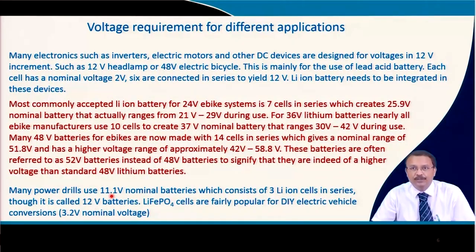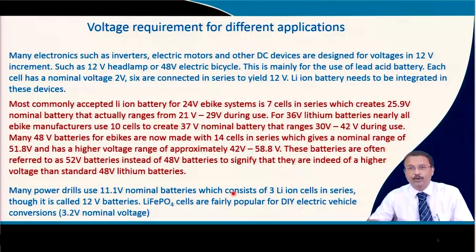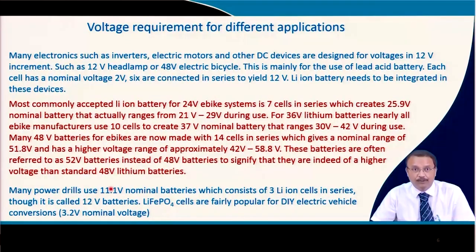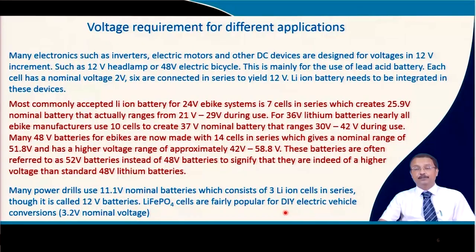Many power drills use an 11.1 V nominal battery consisting of just 3 lithium-ion cells in series, making them quite compact. These are still referred to as 12 V batteries, and lithium iron phosphate cells are fairly popular for this purpose. For a DIY electric vehicle conversion project, 3.2 V nominal lithium iron phosphate cells are used to build a battery for a small sports car.